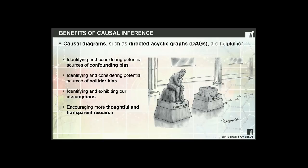The wider benefits of causal inference include not just identifying and considering potential sources of confounding, but also identifying potential sources of collider bias — which would be very hard to understand without causal inference methods. They help with identifying your own assumptions about the data generating process and making them public. We move from a system where a traditional epidemiologist would have private conversations — 'I'm not really sure, I think these are the main confounders' — choosing variable selection in the dark. Now we produce a DAG, we show it, and everybody knows the assumptions we've made. This is hugely important and encourages a more transparent way of researching.